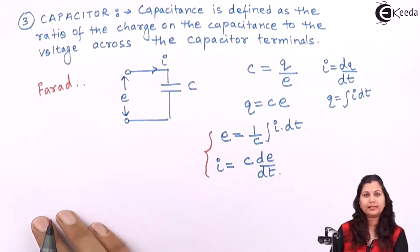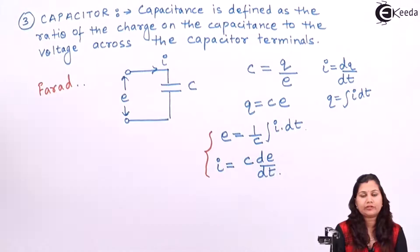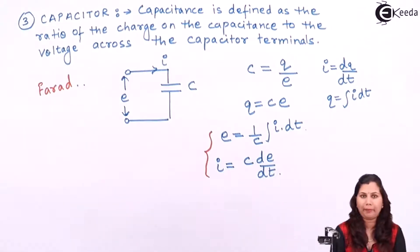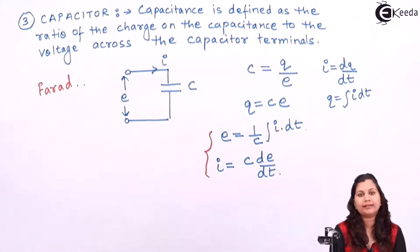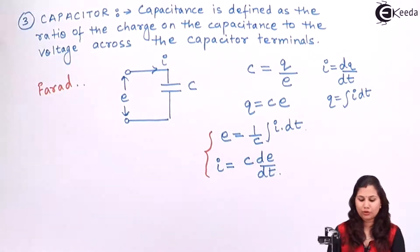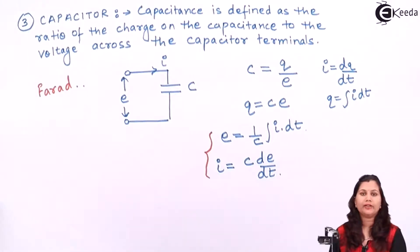Now let us consider an electrical system. First we will consider an electrical system having the series combination of these three elements — resistor, inductor, and capacitor. After that we will study another electrical circuit having the parallel combination of these three basic elements. So let us first study the series combination of the resistor, inductor, and capacitor.